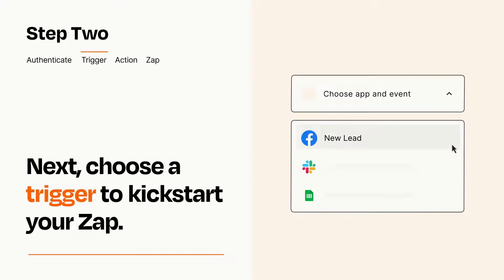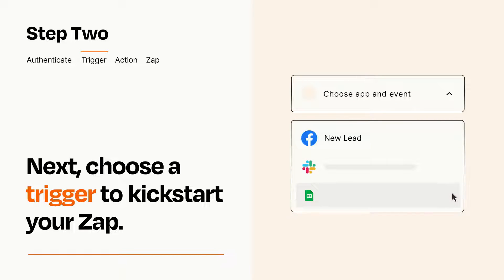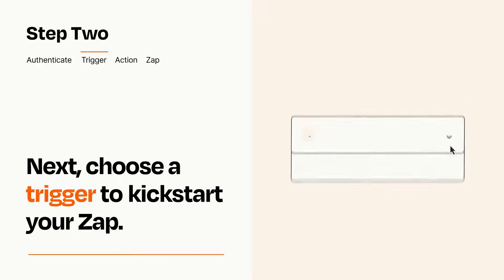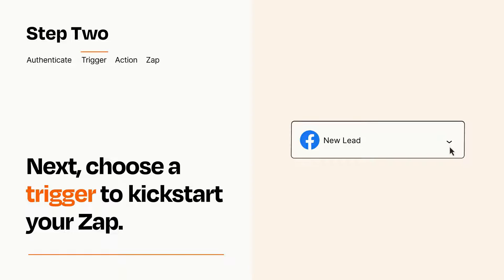Now let's set up your trigger, which is the event that starts your Zap. Pick the trigger event that you want from the list. When you set up this step, your Zap will pull in test data from your trigger app that you'll see later when setting up your action app.